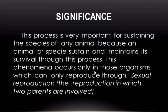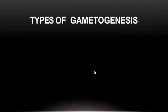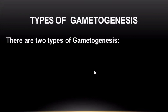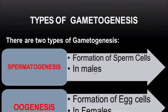This phenomenon occurs only in those organisms which reproduce through sexual reproduction — as we know, sexual reproduction involves two parents. So it is very important for the survival of species. There are two main types of gametogenesis: spermatogenesis and oogenesis. Spermatogenesis is the formation of sperm cells and occurs in males; oogenesis is the formation of egg cells and occurs in females. In this video we'll discuss spermatogenesis in detail, and in the next video I'll talk about oogenesis.